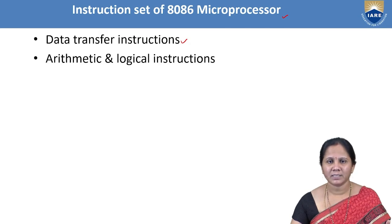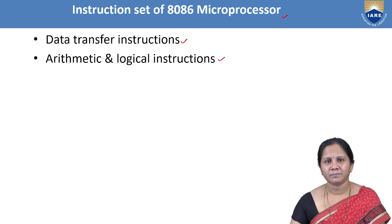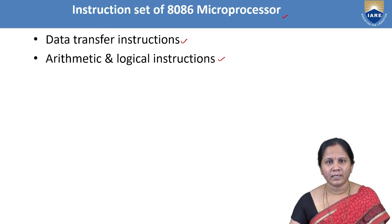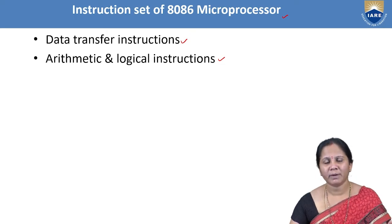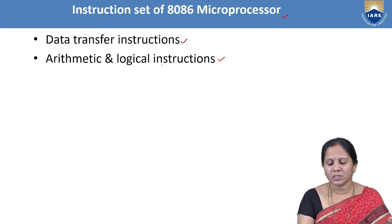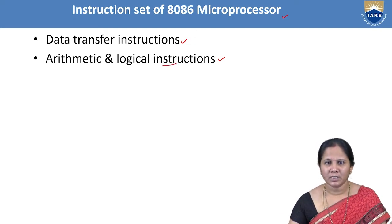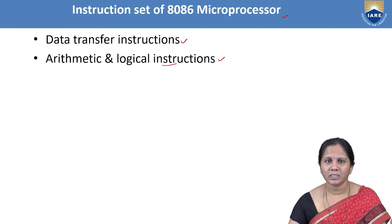The next classification we discussed is arithmetical and logical instructions. In arithmetic, we covered addition, addition with carry, subtract, subtract with borrow, multiplication, signed multiplication, division, signed division, convert byte to word, and convert word to double word. For logical instructions, we covered AND, OR, XOR, and NOT, along with their general formats and functions.